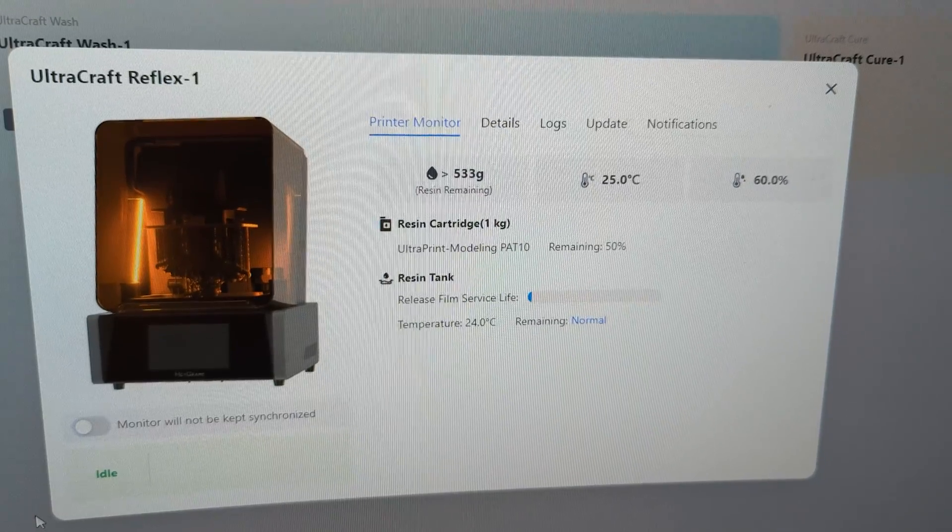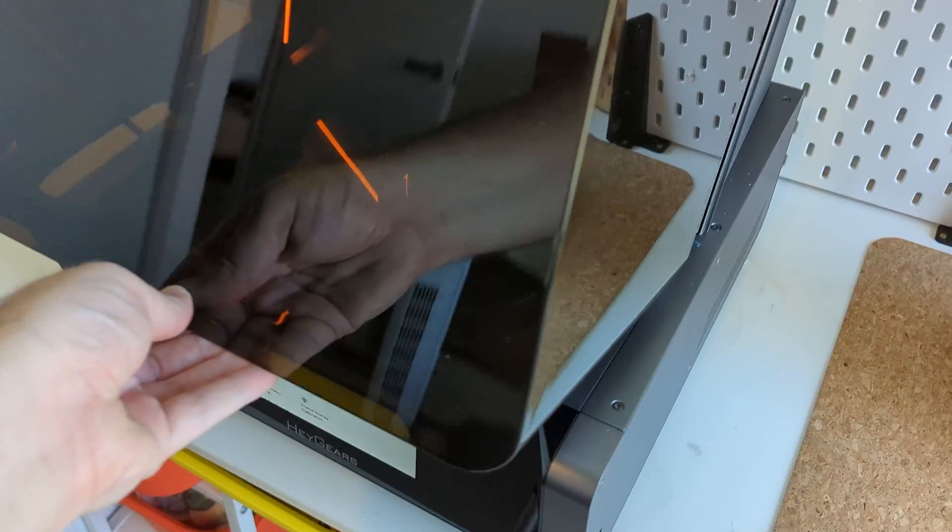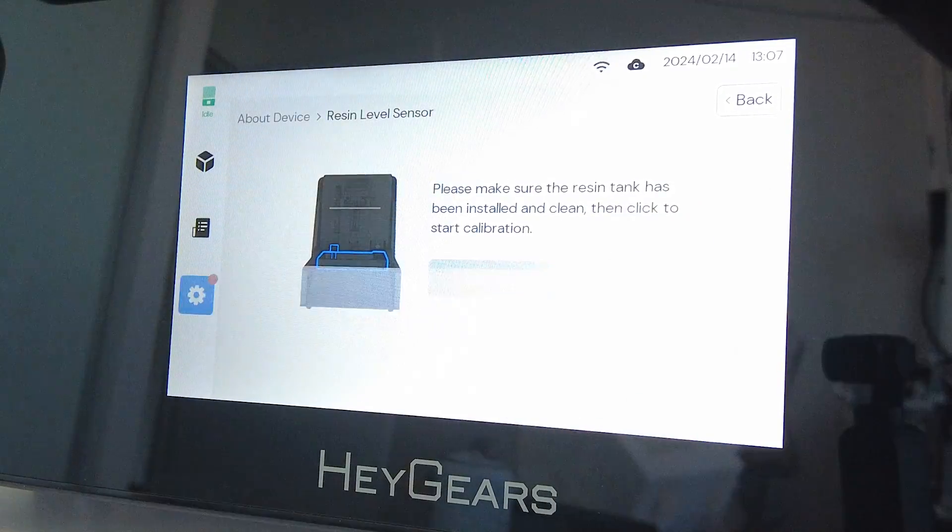And it automatically detected I was using the transparent PAT10 resin using an RFID tag, which was really cool. While I was here I also added the resin sensor which just snapped into place, then ran through a little calibration test.